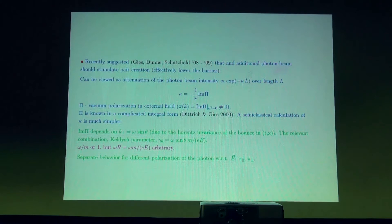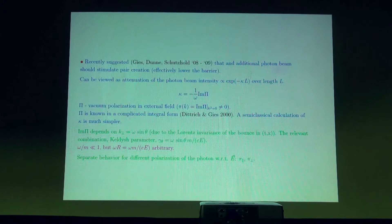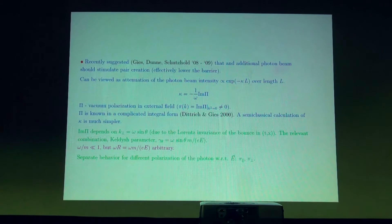However, it turns out that the physically interesting results can be found by a simple semi-classical calculation, without going to that complicated integral with special functions. First of all, one should notice that a uniform constant electric field is Lorentz invariant under boosts along the field. Therefore, whatever direction the photon is directed toward the field, it is only the perpendicular component of the photon momentum which matters, because any longitudinal component can be eliminated by a boost.